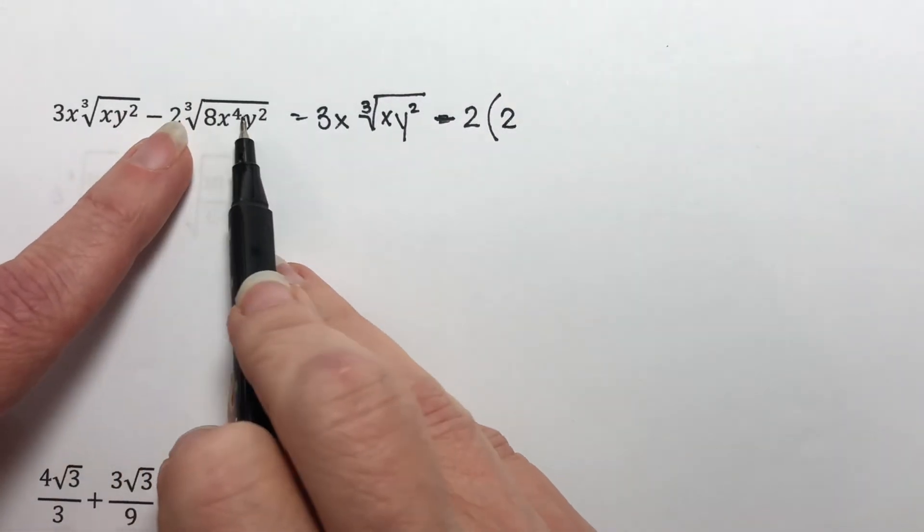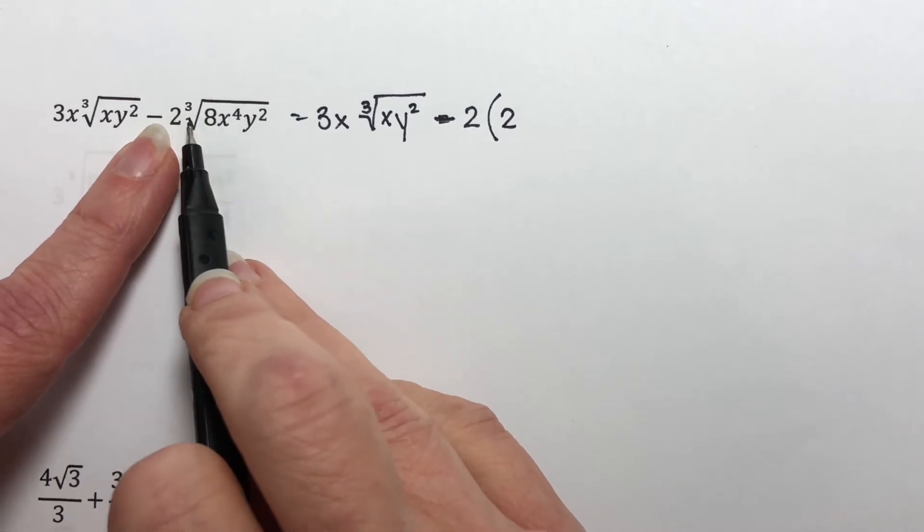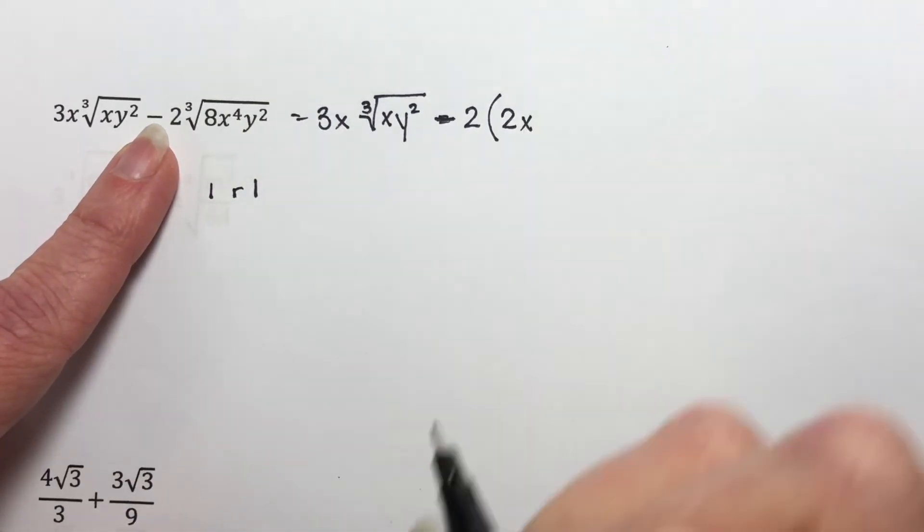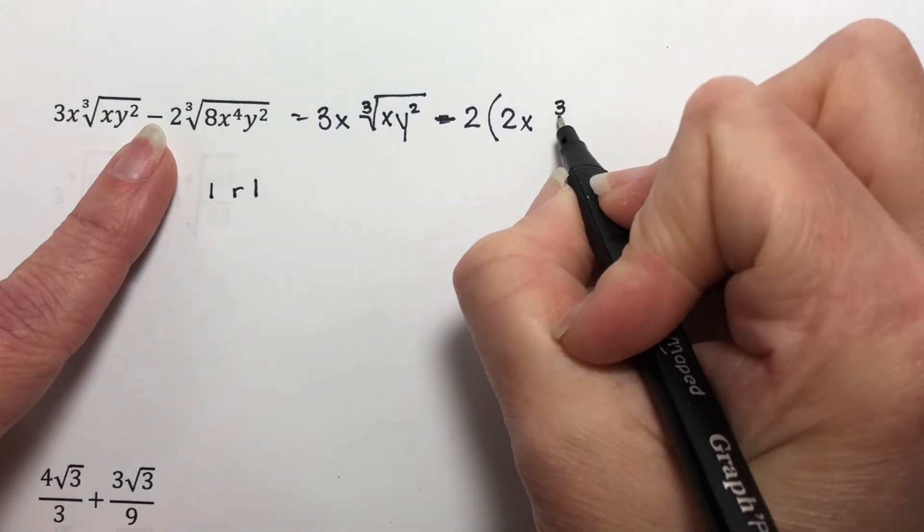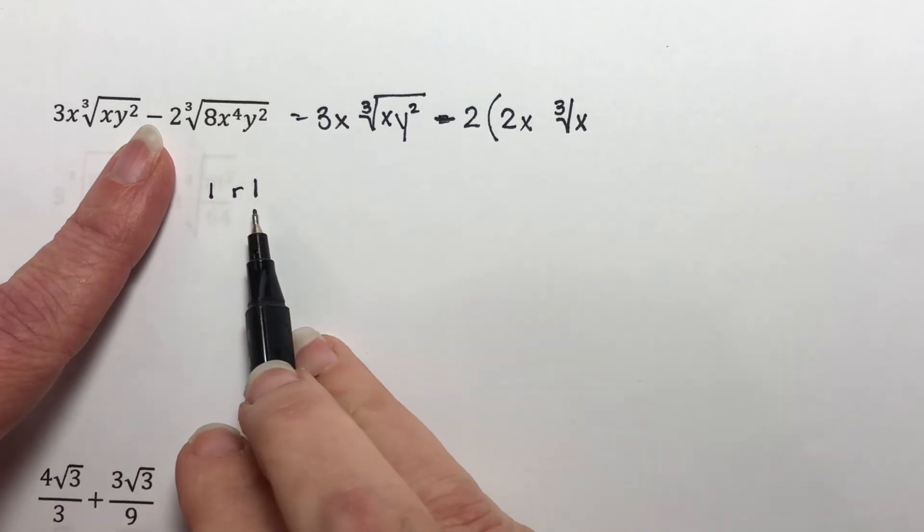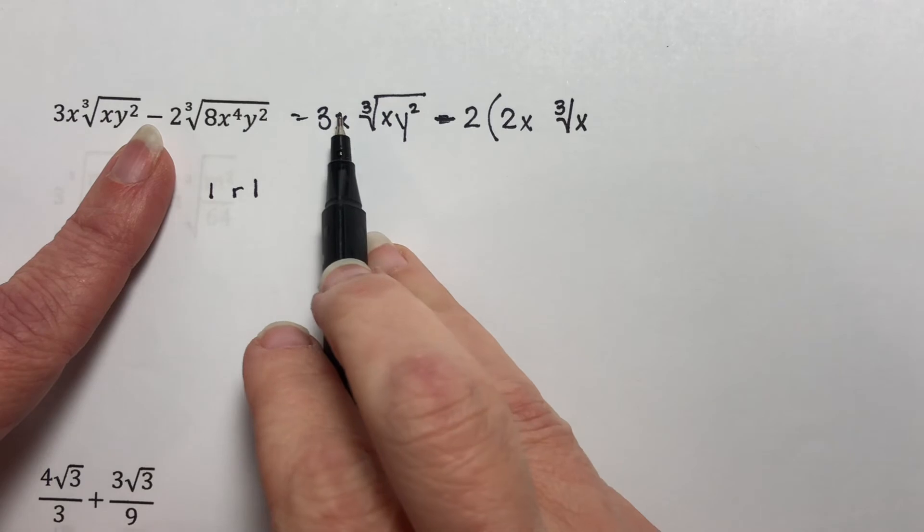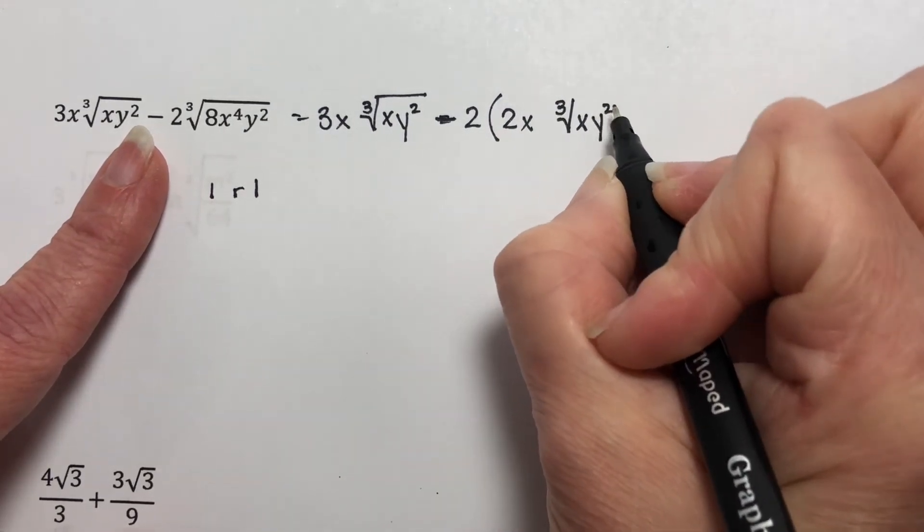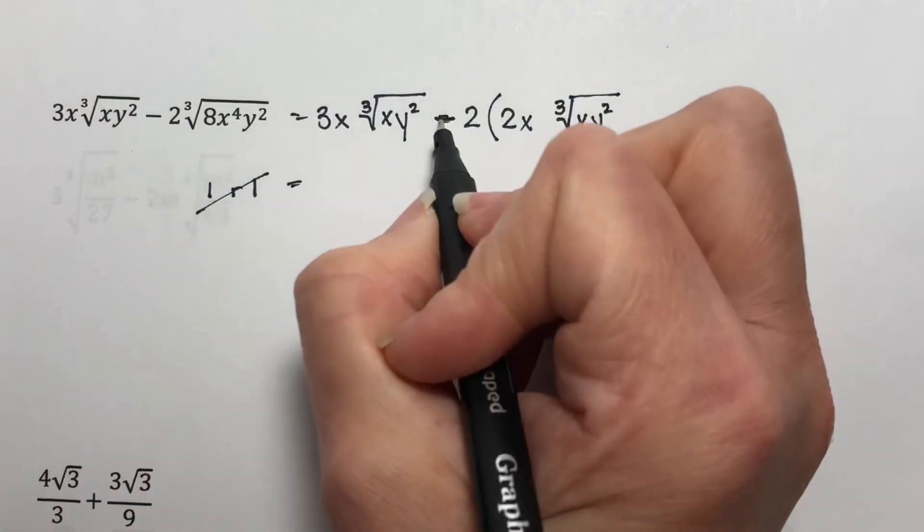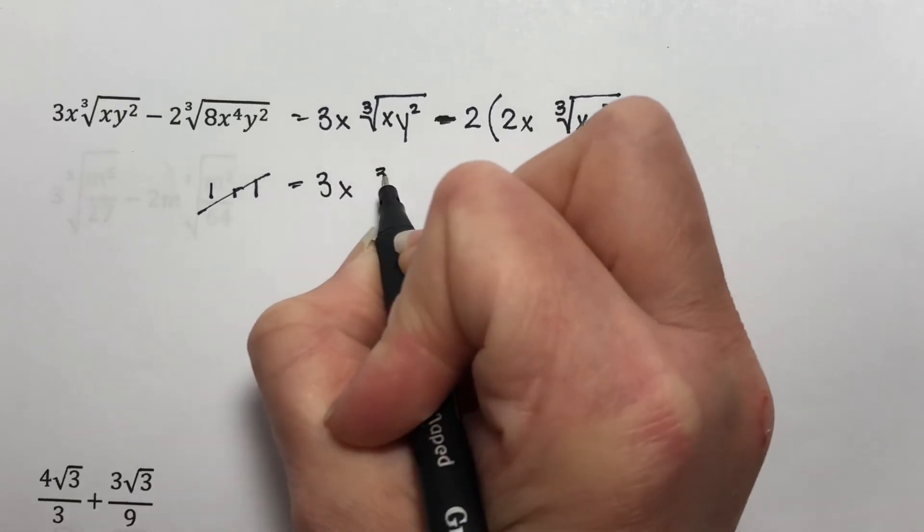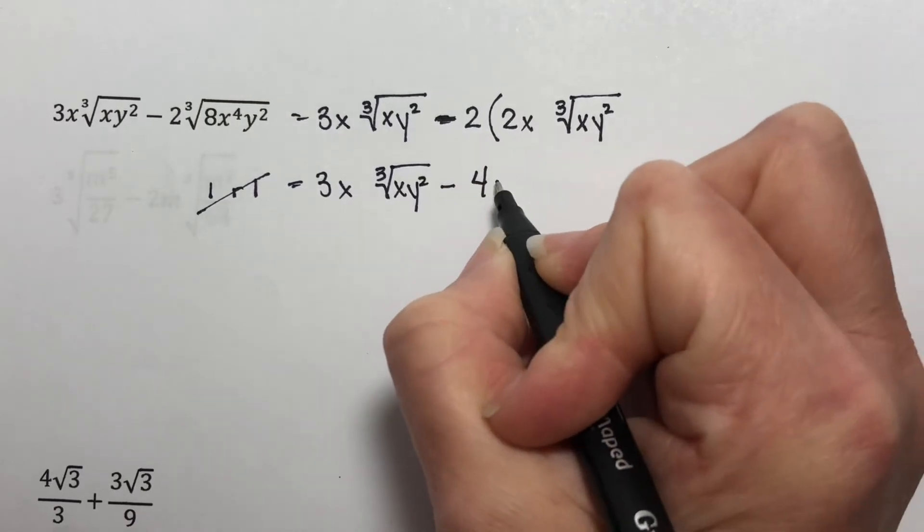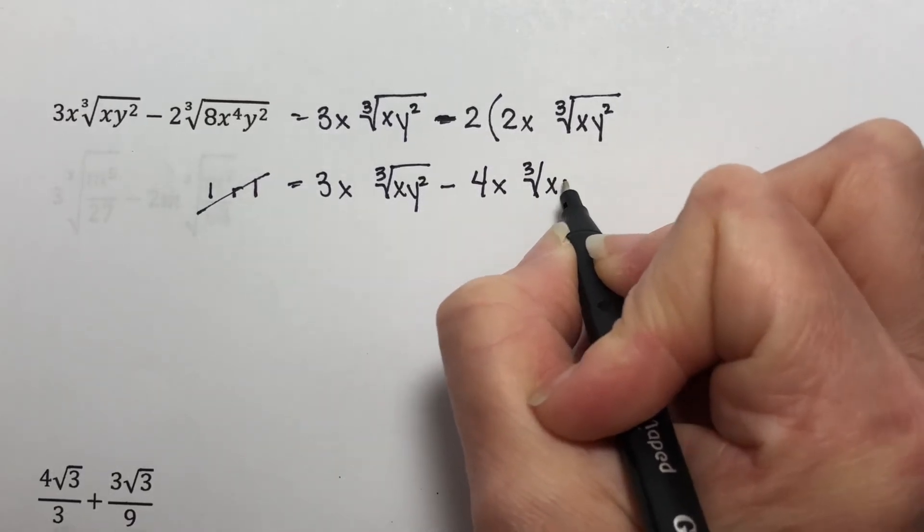Now, four is larger than three. So we need to simplify this. Three goes into four one time with a remainder of one. So I'm going to have an x to the understood first power on the outside. And I'm going to keep an x to the understood first power on the inside. Outside exponent, inside exponent. Now, two is smaller than three. So that part does not simplify.